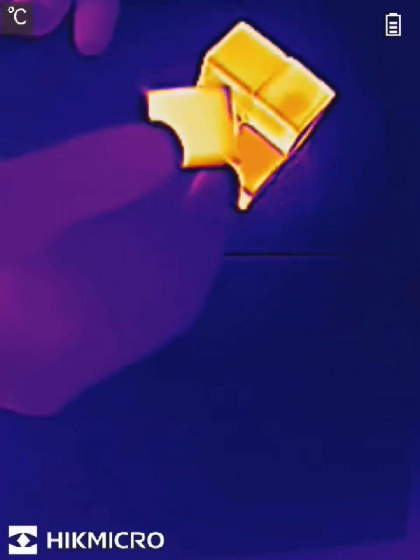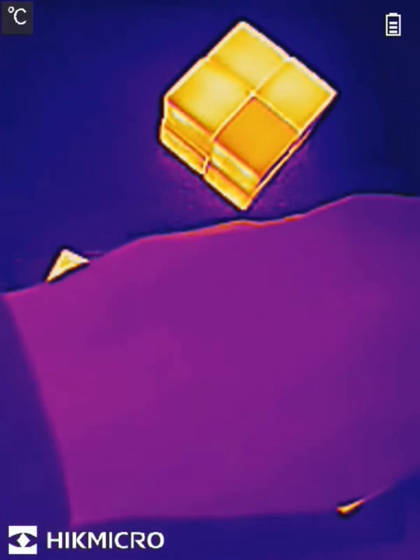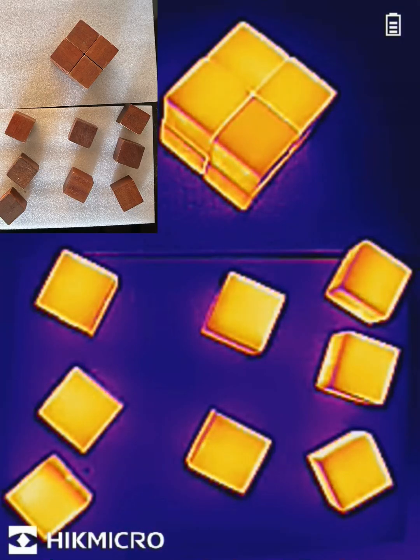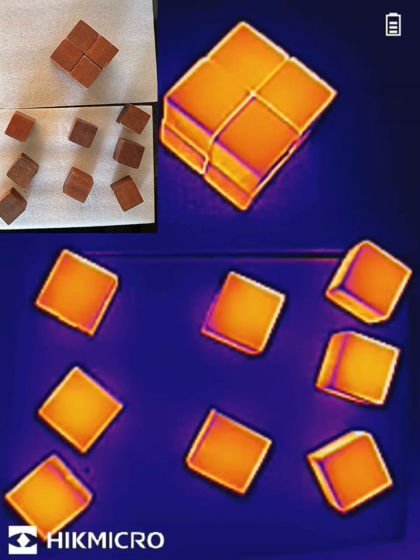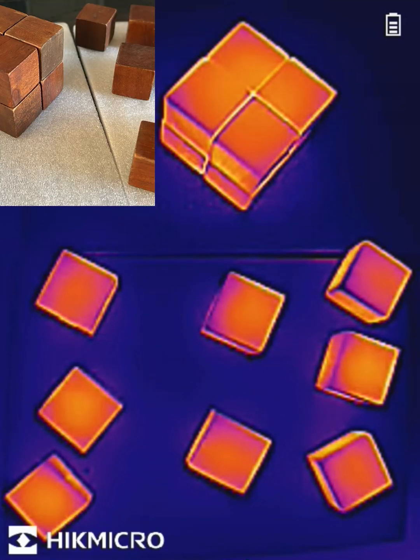To see the effect of surface area on the rate of cooling, I've got 16 wooden cubes that have come out of the oven at about 50 degrees Celsius. I've got eight of them stacked in a 2x2 cube with a smaller total surface area, and eight of them spread out with a much larger surface area.